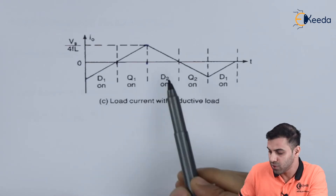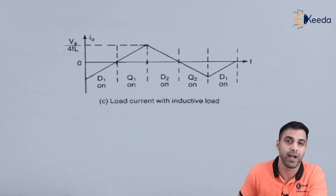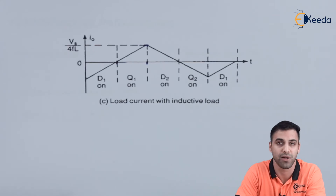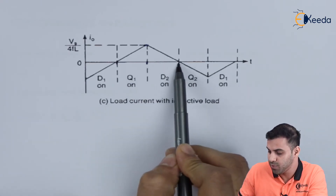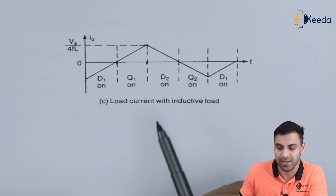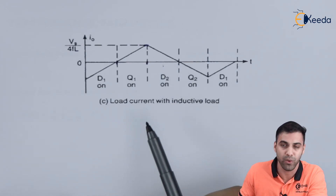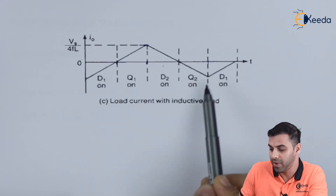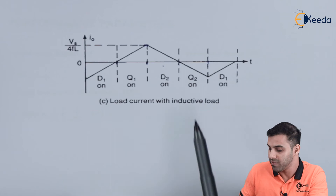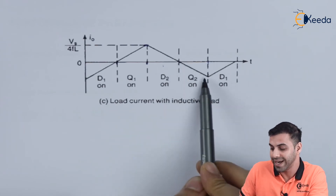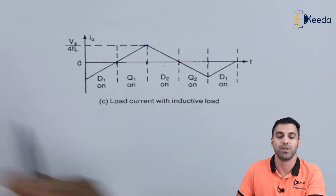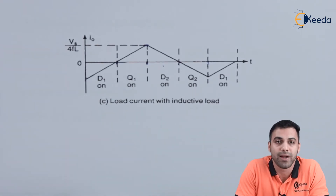After the inductor completely gets charged, it slowly starts discharging. When D2 is on — D1 and D2 are both freewheeling diodes, used for the discharging network of the inductor — the inductor starts discharging through D2. Then when we switch on Q2, the second transistor, the inductor completely discharges and after that completely gets charged to the negative peak amount of current. This is how an inductive load works in the case of an inverter.